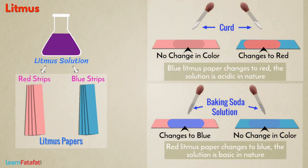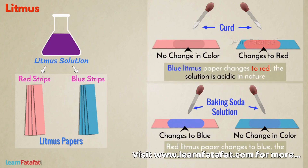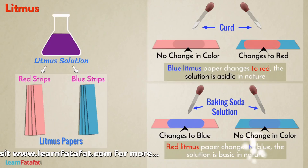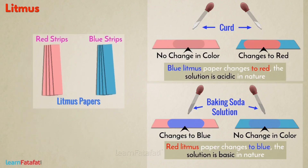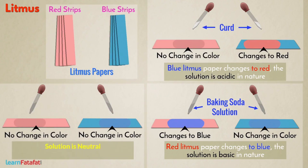So that means when blue litmus paper changes to red, the solution is acidic in nature. And when the red litmus paper changes to blue, the solution is basic in nature. There is a possibility that the solution will not change the color of any litmus paper. In such a case, the solution is neutral — that is, neither acidic nor basic.